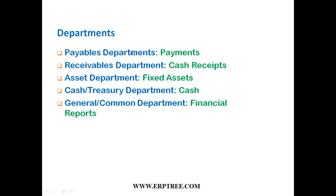The general or common department collects information from all other financial departments and prepares financial reports. So payables processes payments to suppliers, receivables collects payments from customers, the asset department maintains all organization assets, cash/treasury maintains cash, and the general department prepares the reports - these are the key functions falling under finance.